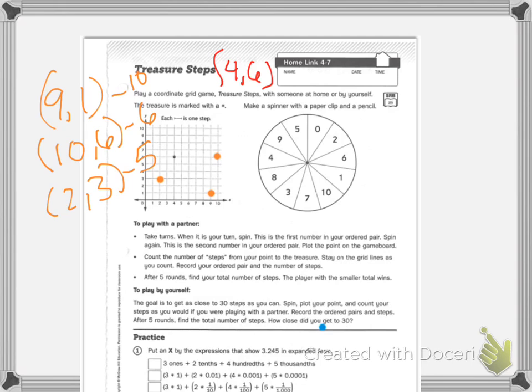The bottom says put an X by the expressions that show 3 and 245 thousandths in expanded form. So that's either using the words, using multiplication in parentheses, fractions. Number 2 says write 605 thousandths in expanded form. And it says use any version of expanded form you wish. So I will be checking for those two tomorrow. All right. Now let's go.